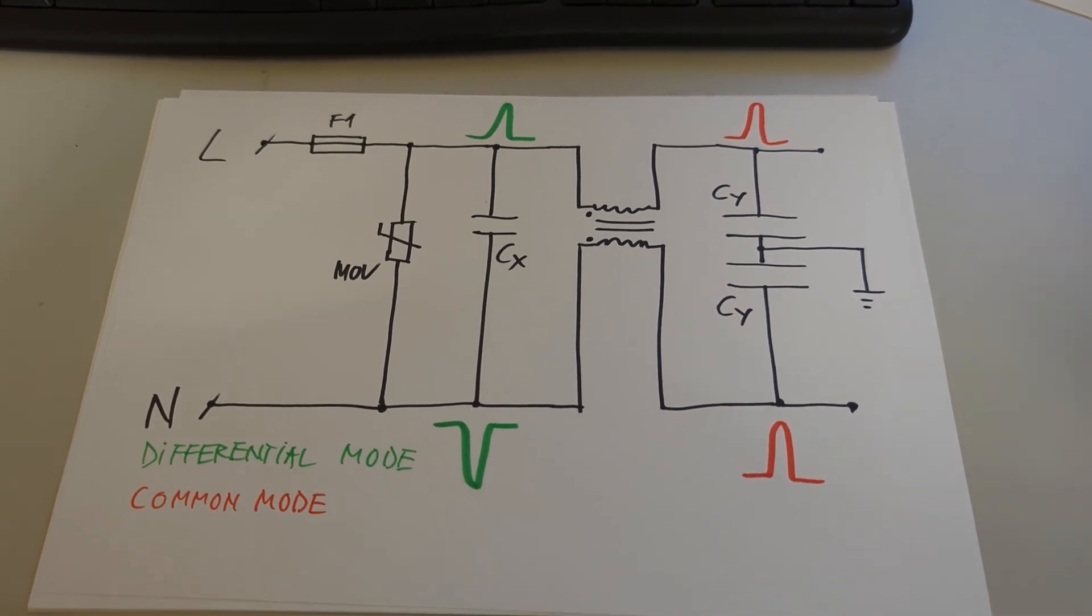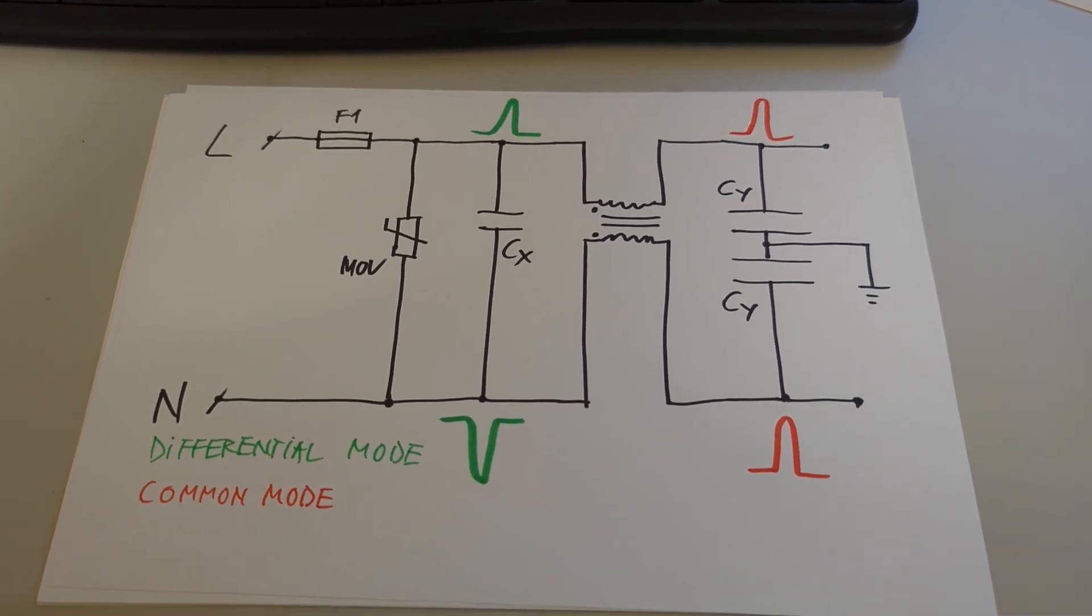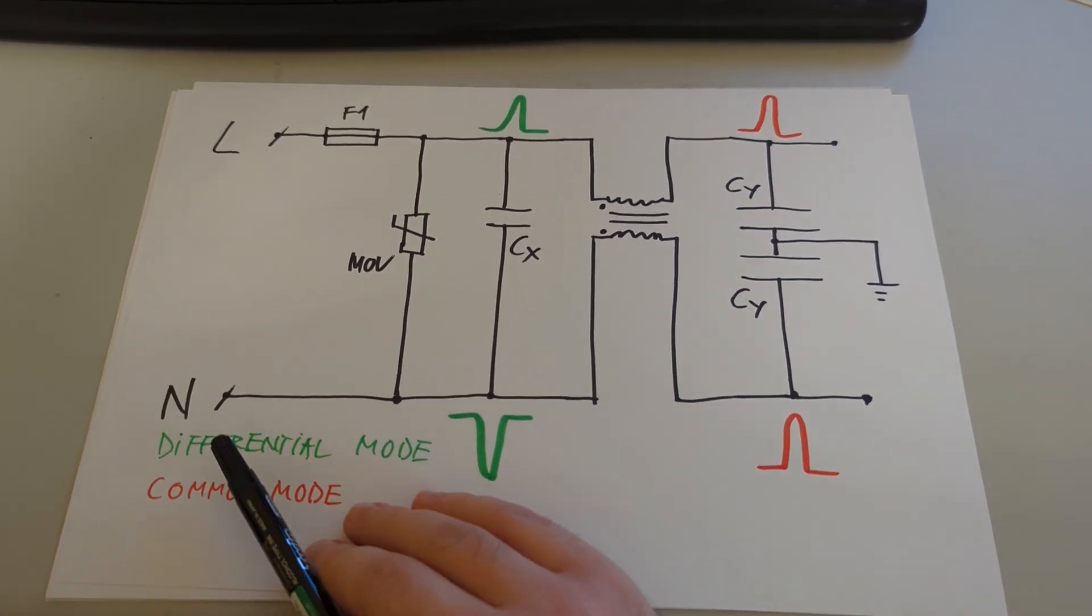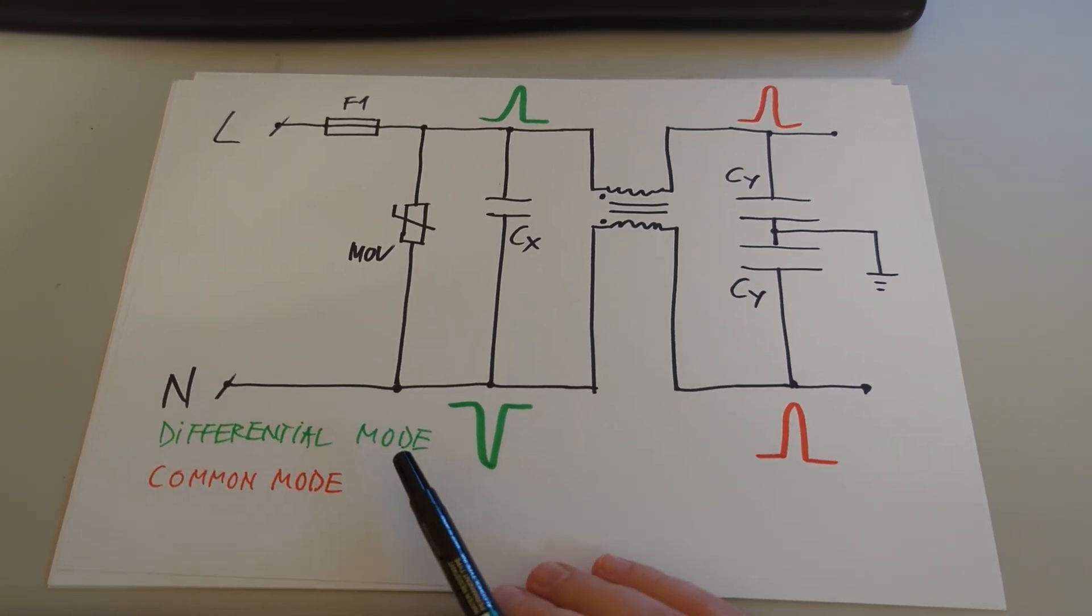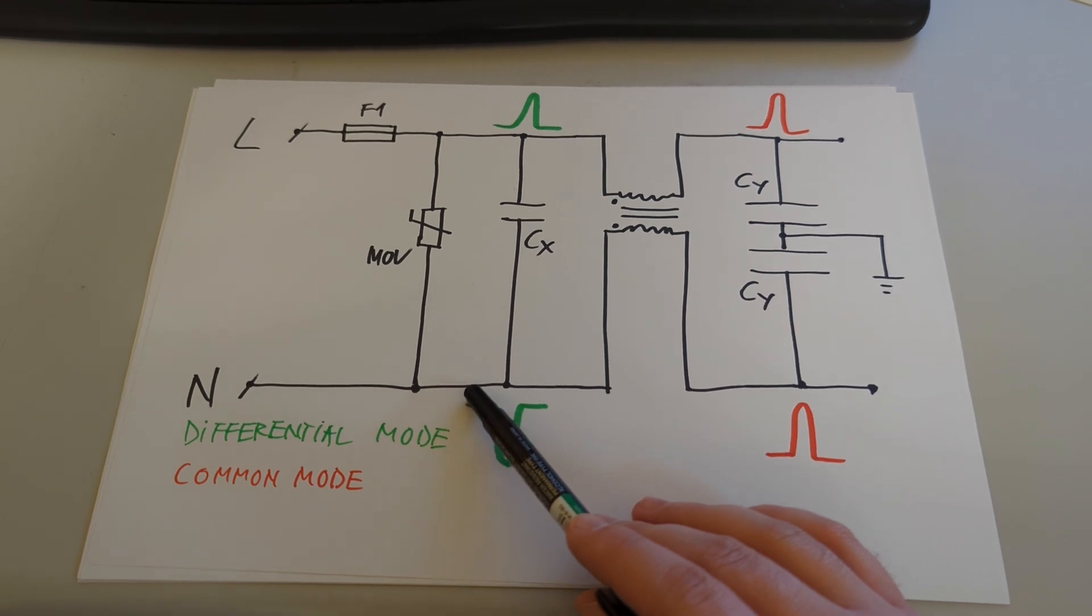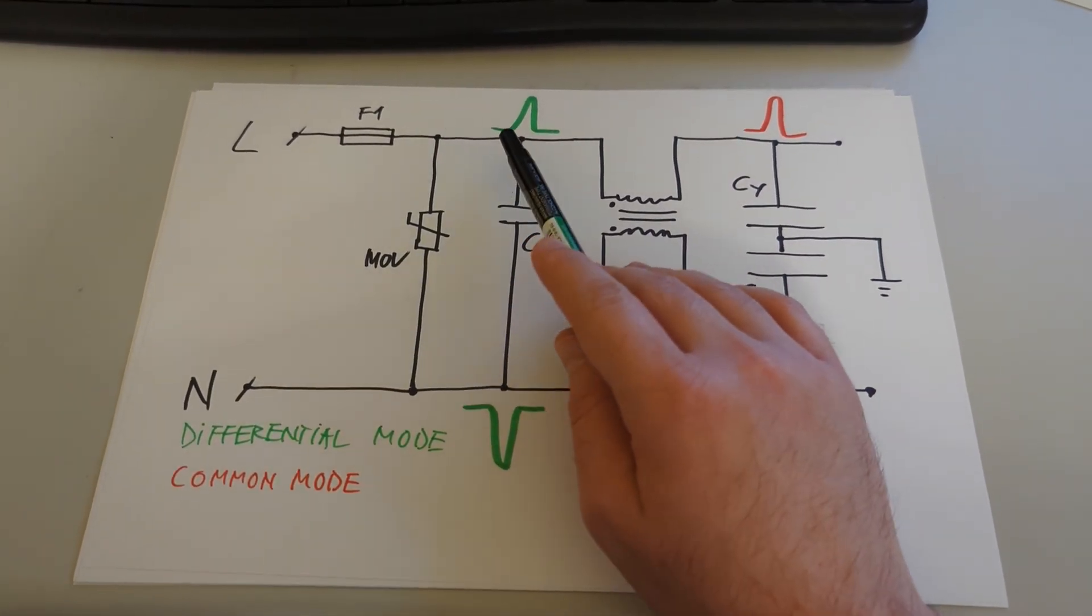And if you try to get into more details, we basically have two types of noise that could appear. First of all, we have differential mode noise, which looks something like this. So let's say as the neutral goes down, the live goes up. So they are out of phase, meaning differential.